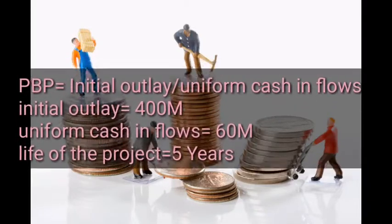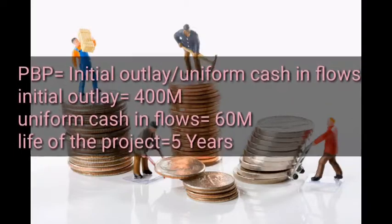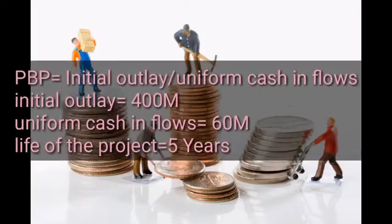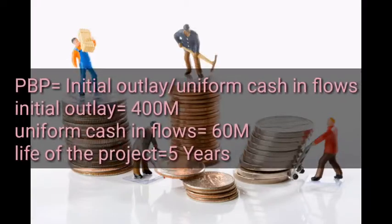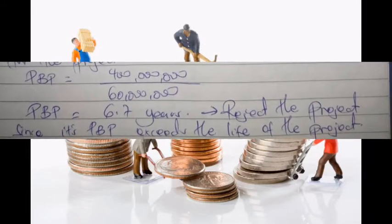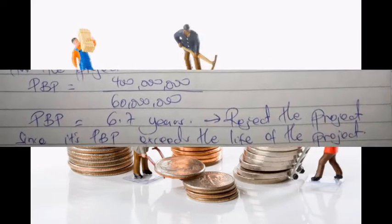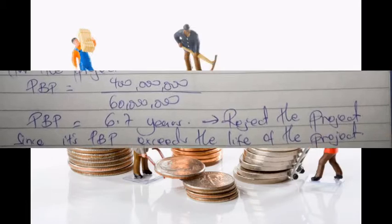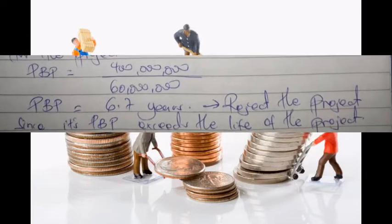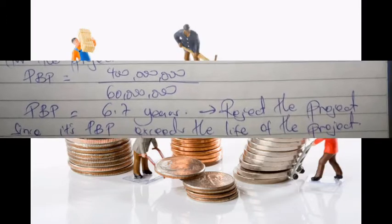We substitute into the formula: initial outlay divided by uniform cash inflows, which gives 400 million divided by 60 million. The payback period is 6.7 years. However, the life of the project is 5 years, therefore we reject the project since the payback period exceeds the life of the project. That is all about payback period for uniform cash flows.